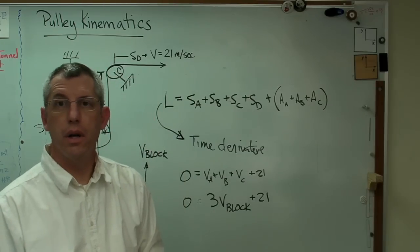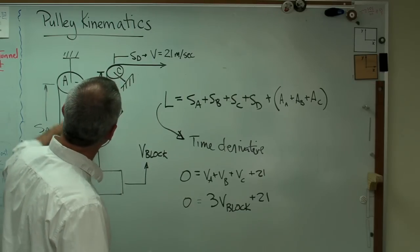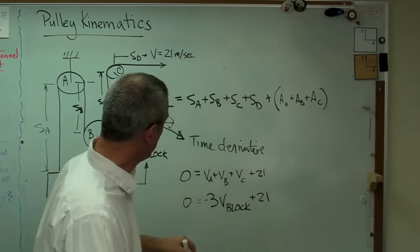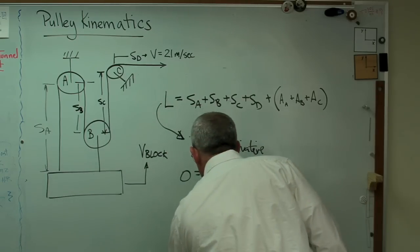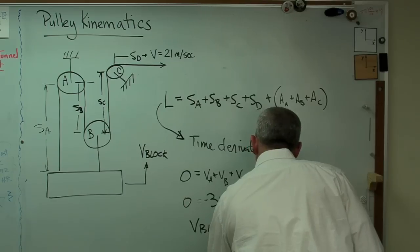There's the simple matter of signs. These ropes are getting shorter, that one's getting longer, so I'm going to call this a negative. And when I push this over there, I'm going to find out that V block equals seven meters a second.